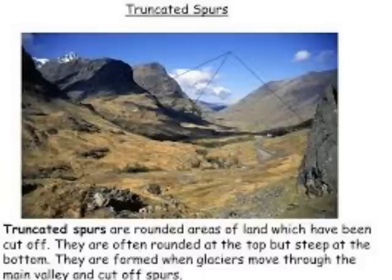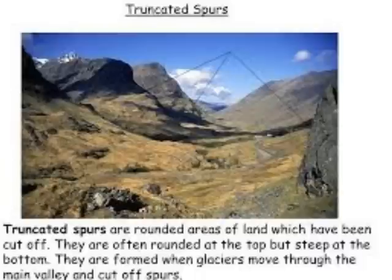Truncated spurs can also form. These form when a river erodes the landscape. Ridges of land form in its upper course which jut into the river — these are called interlocking spurs. A glacier cuts through these ridges, eroding them away, forming truncated spurs.